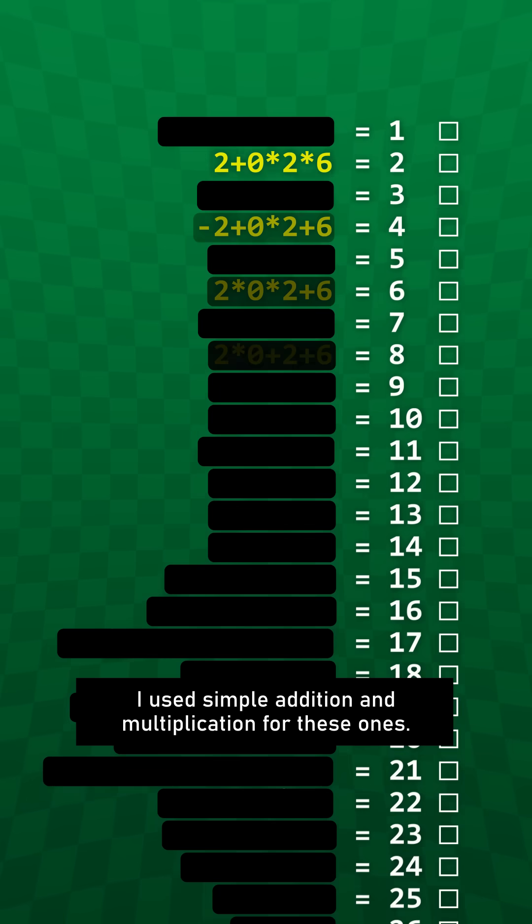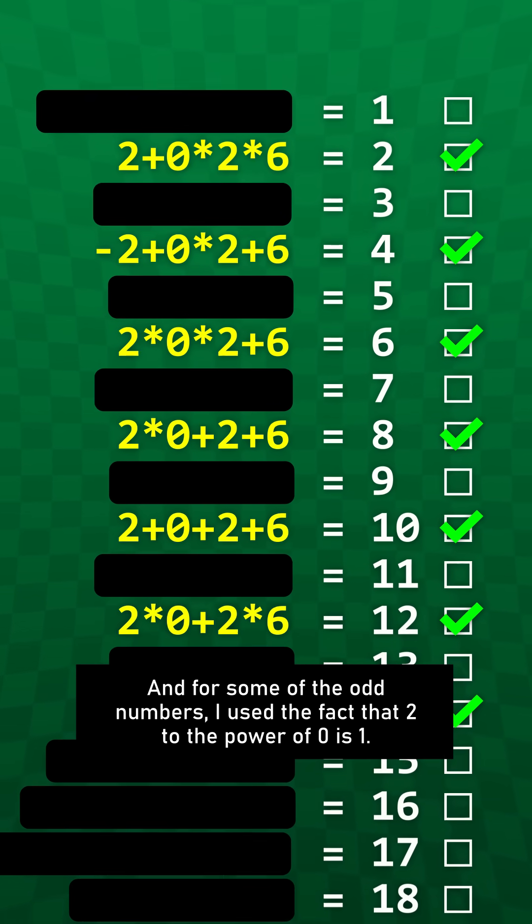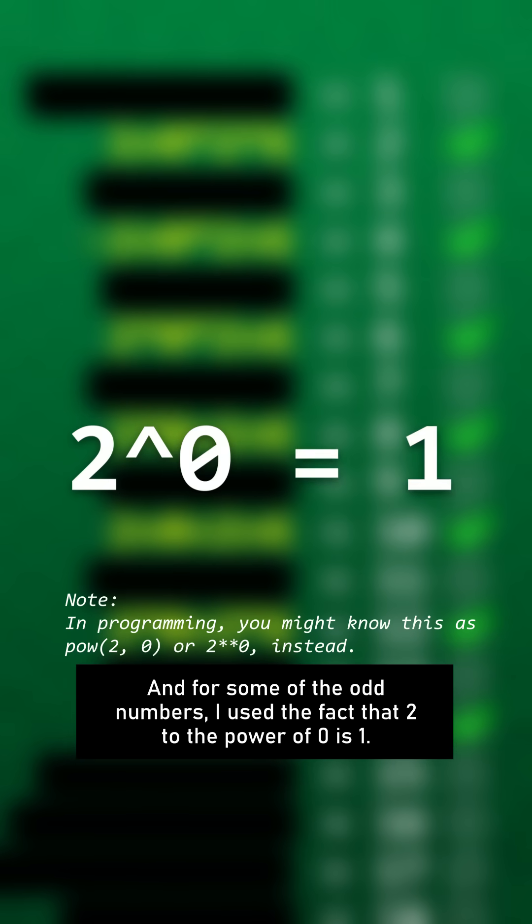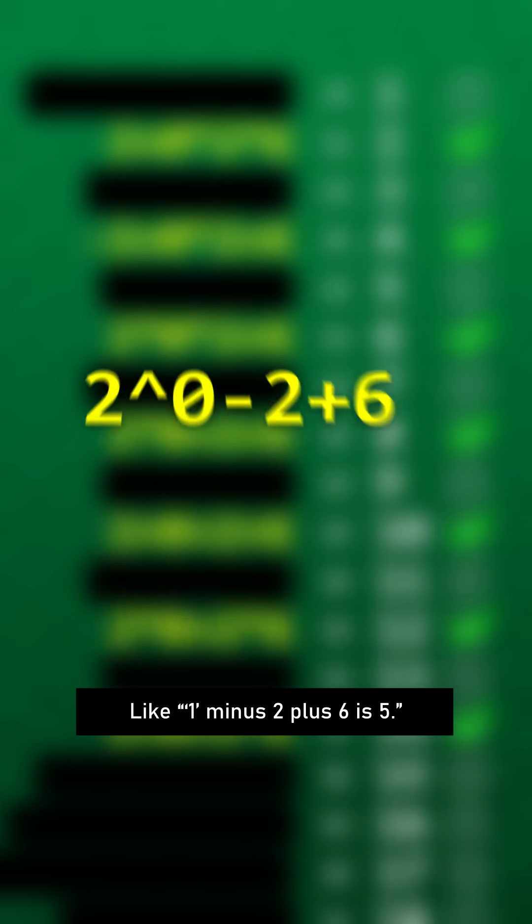I used simple addition and multiplication for these ones. And for some of the odd numbers, I used the fact that 2 to the power of 0 is 1. Like 1 minus 2 plus 6 is 5.